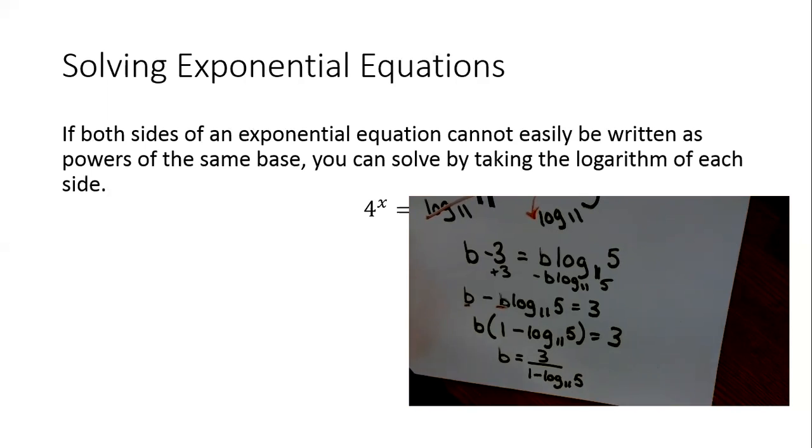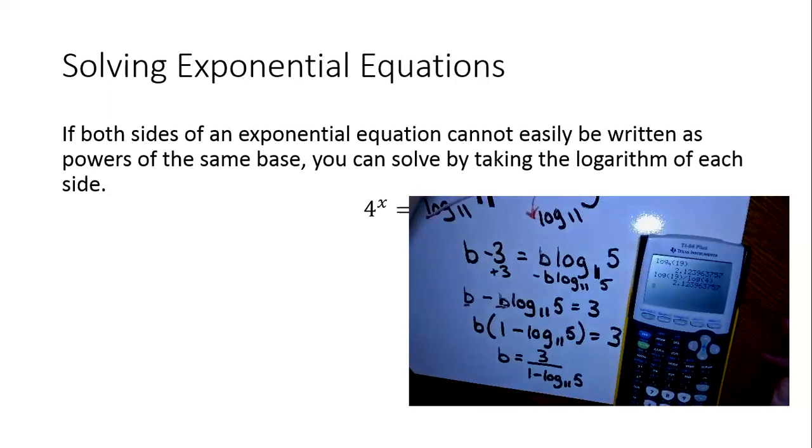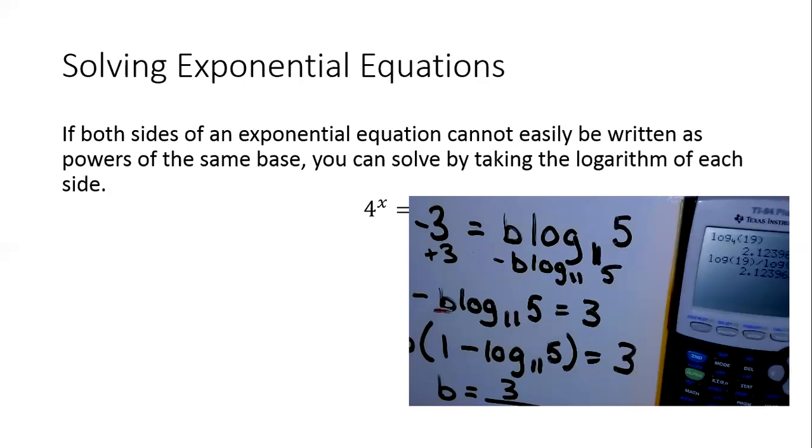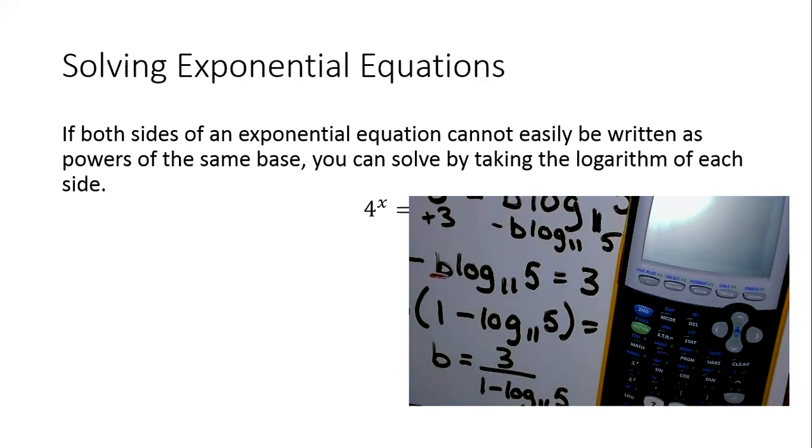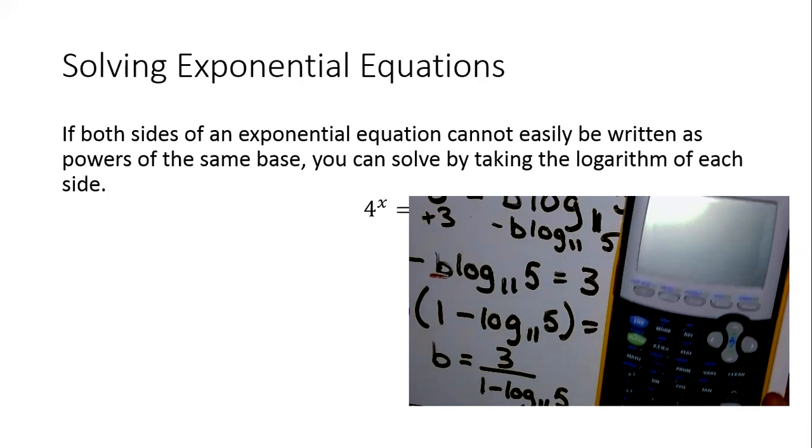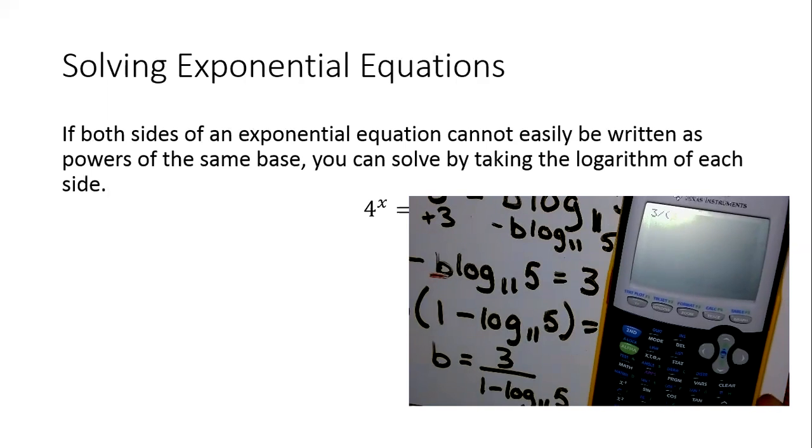So once again, on the calculator, if we look at the calculator, let's clear it out here. I'm going to do 3 divided by, and then parentheses to group the entire denominator. So 3 divided by 1 minus, and I'm going to do my log base. So log base of 11, 5, close my parentheses, and we should get 9.12.